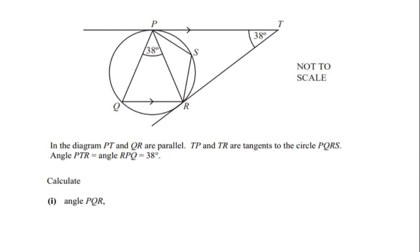Hello and welcome to my channel. In this video we are going to solve an example on circle theorems. In the diagram, PT and QR are parallel to each other. TP and TR are the tangents to the circle PQRS — the lines TP and TR just touch the circle at point P and point R.